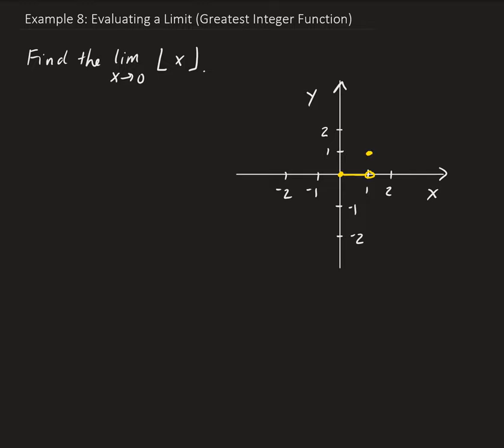So anything between 1 and 2, the output for this function is going to be 1. And it continues like this.